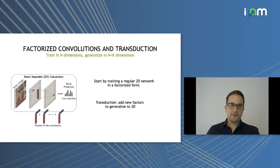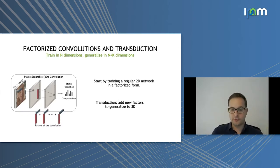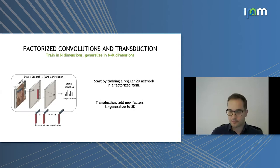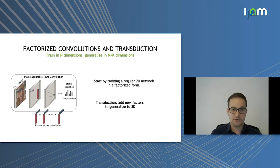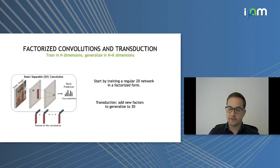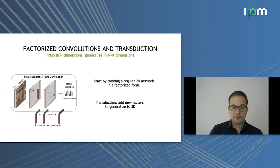Once you have this CP structure on a convolution, you've disentangled the modes of variation of the convolution, giving a separable convolution. You can train such a separable convolution in the 2D domain — for example for prediction from static images — and then apply transduction to generalize to 3D or the spatio-temporal domain.